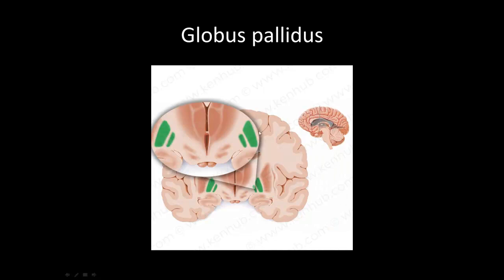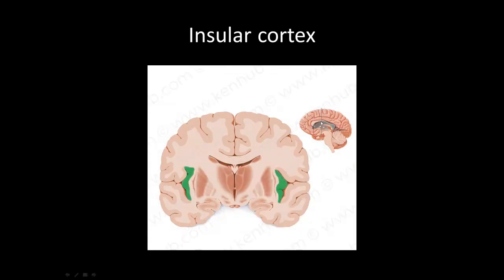Then we have the globus pallidus — there's actually a globus pallidus externa and interna, but for now just know these two structures are globus pallidus, another basal nucleus involved in the motor system. This structure highlighted in green is the insular cortex, kind of inside these two folds of the brain. The insular cortex is involved in consciousness, self-awareness, and cognition.